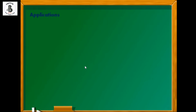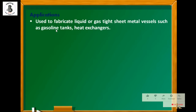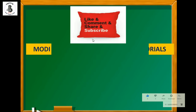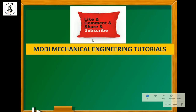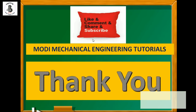Some applications: seam welding is used to fabricate liquid or gas tight sheet metal vessels such as gasoline tanks and heat exchangers. I hope you understood this. If you like this video, please subscribe and share for more mechanical engineering tutorials. Thank you so much and keep watching.